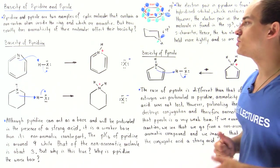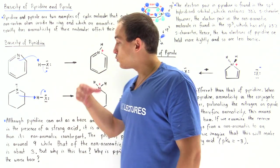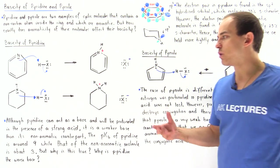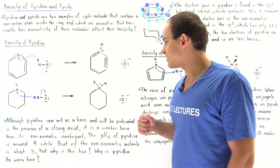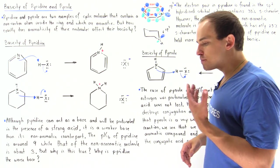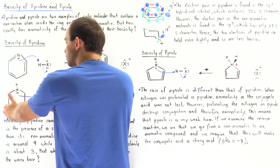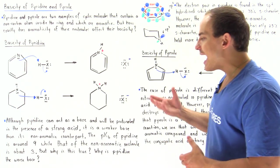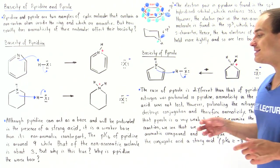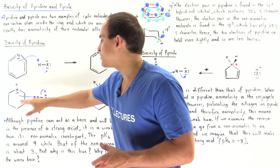We have a positive charge on our nitrogen. In the non-aromatic case, a similar process takes place: the lone pair of electrons on the nitrogen takes away the H, forming a conjugate acid which also has a positive charge on the nitrogen. From experimental results, pyridine is a worse base than its non-aromatic counterpart. Although pyridine can act as a base and will be protonated in the presence of a strong acid, it is a weaker base than its non-aromatic counterpart.